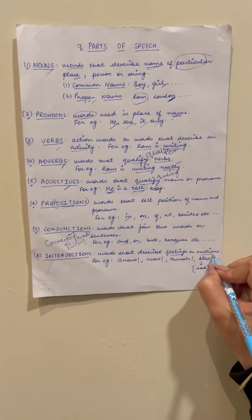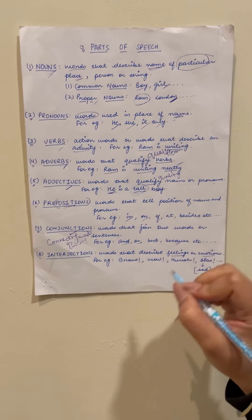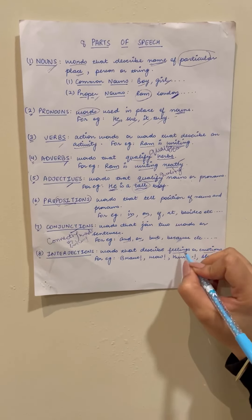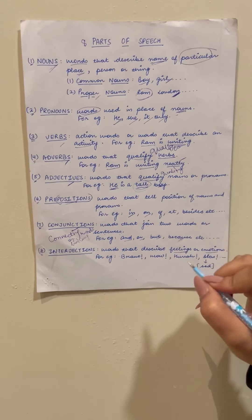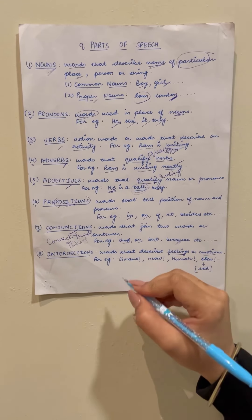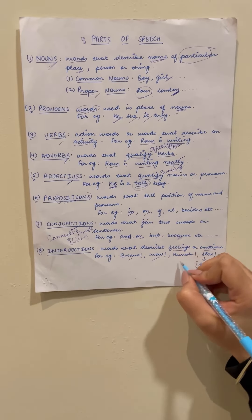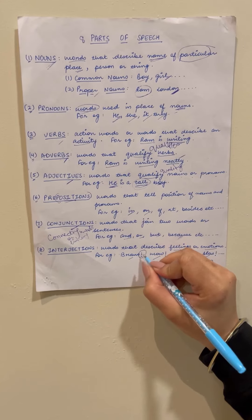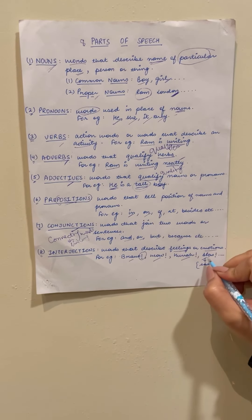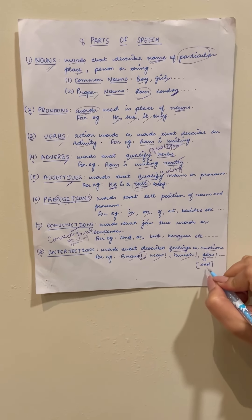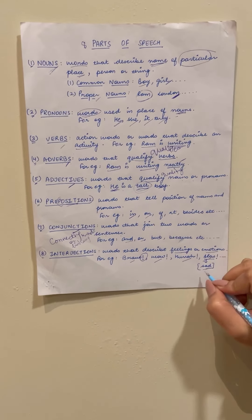So what are nouns? Words that describe the name of a particular place, person, or thing. उन words को हम nouns कहते हैं जो कि किसी इंसान, किसी भी जगह और कोई भी चीज़ के particular name को बताए। उससे हम क्या कहते हैं? Nouns.